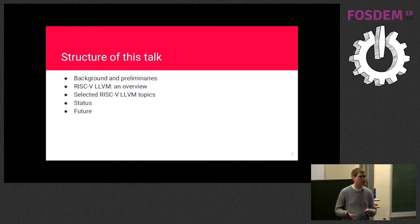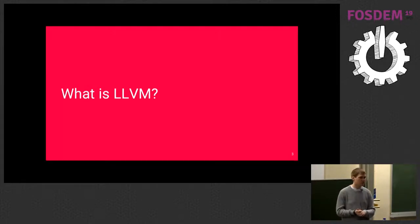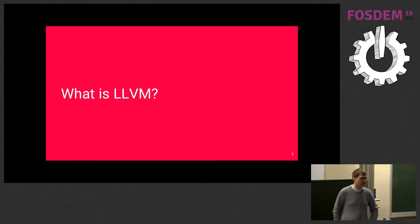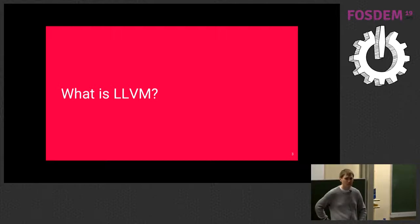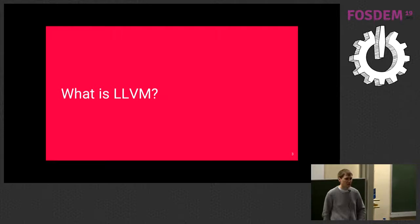LLVM is a popular compiler infrastructure with a permissive license — recently changed to Apache from a BSD-style license. It has a library-based design which many people find useful when integrating it into their projects. It's often used paired with the Clang language front-end, which is the equivalent of GCC for C and C++ support. A number of other languages use it as their back-end, most notably Rust, as well as Swift, Julia, and others.